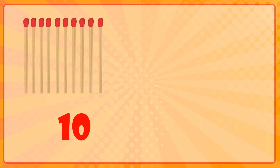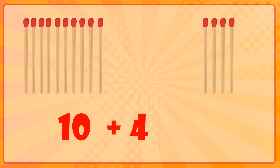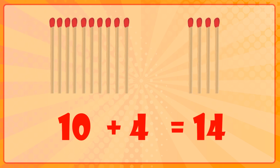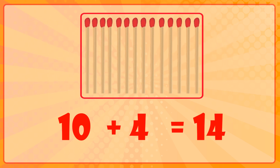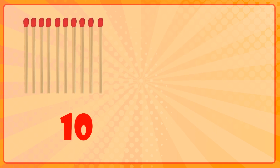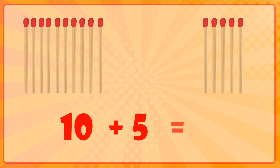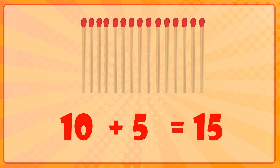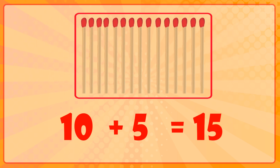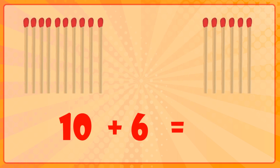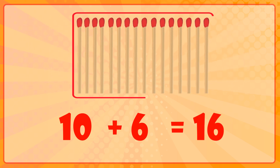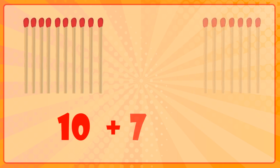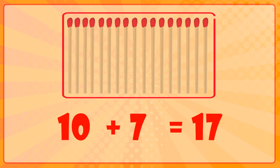10 matchsticks plus 3 matchsticks is equal to 13 matchsticks. 10 matchsticks plus 4 matchsticks is equal to 14 matchsticks. 10 matchsticks plus 5 matchsticks is equal to 15 matchsticks. 10 matchsticks plus 6 matchsticks is equal to 16 matchsticks. 10 matchsticks plus 7 matchsticks is equal to 17 matchsticks.